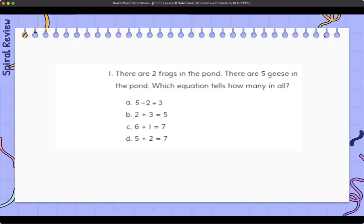Here is the spiral review today. Which equation tells how many in all? There are two frogs in the pond, there are five geese in the pond—which equation tells how many in all? As you're going through this, you're going to work it out with your learning coach, but you're also going to talk it out. For instance, if I were sitting next to you, I would say there are two frogs in the pond.